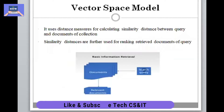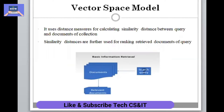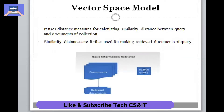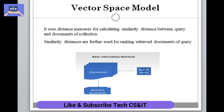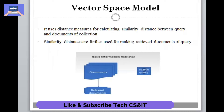It uses a distance measure for calculating similarity between the query and documents. For example, here we have a search processing. We have a search engine that returns results relevant to the query.